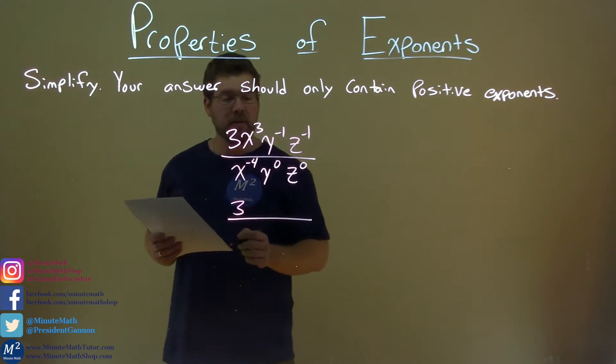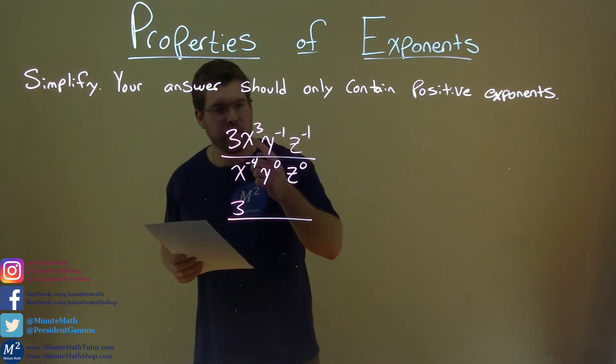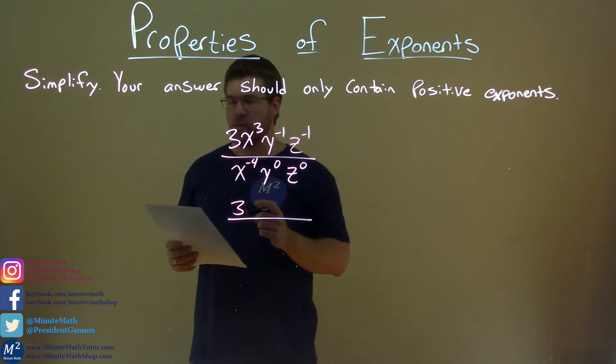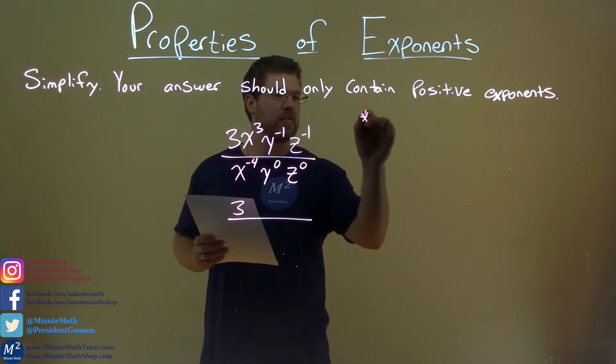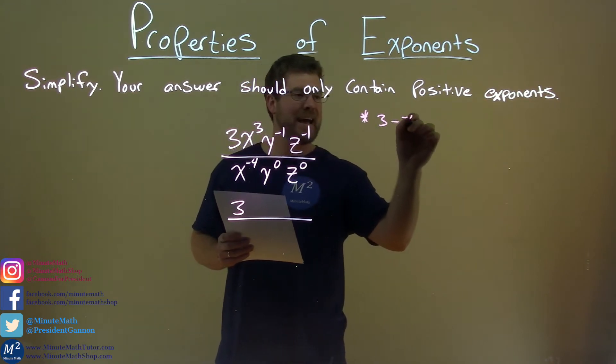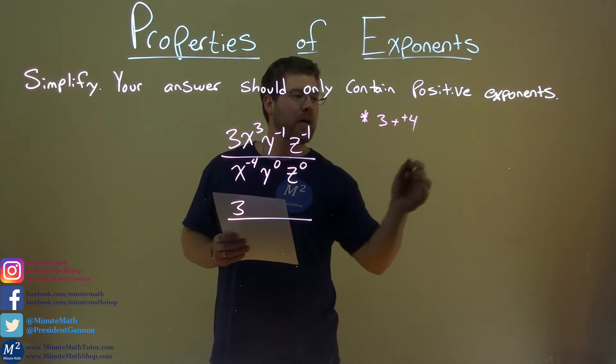Now we'll deal with the x's. Look at the exponents. x to the third power divided by x to the negative 4. Subtract the exponents. 3 minus, let's put it here so you can see it.